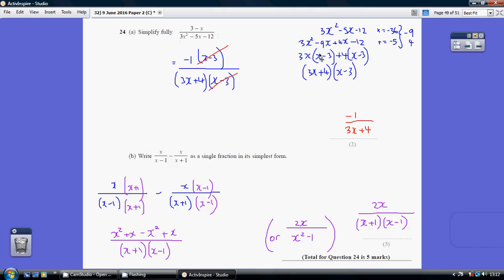I've done this as side working. Some of you can go straight to the answer by trial and error. I've got a slightly more long-winded way. I think of two magic numbers that multiply to make 3 times -12, which is -36, and at the same time these two numbers have to add to be -5.